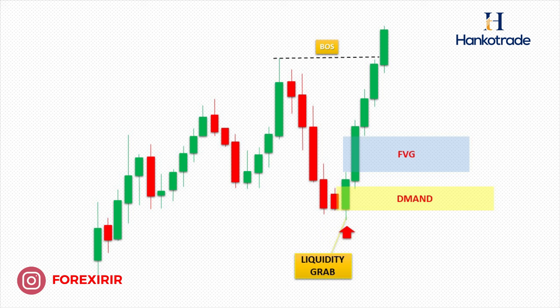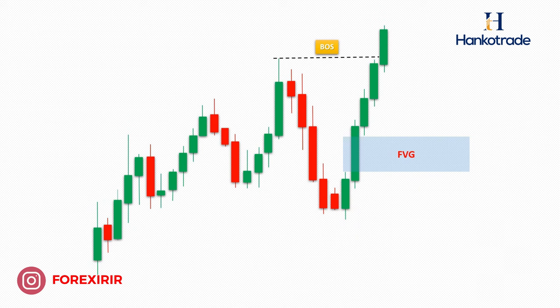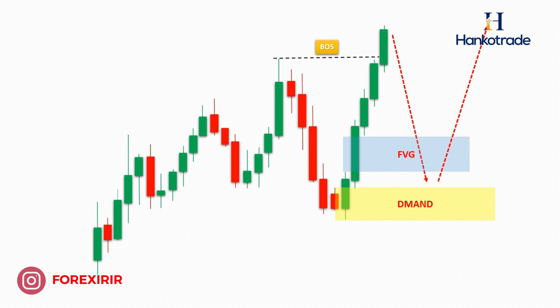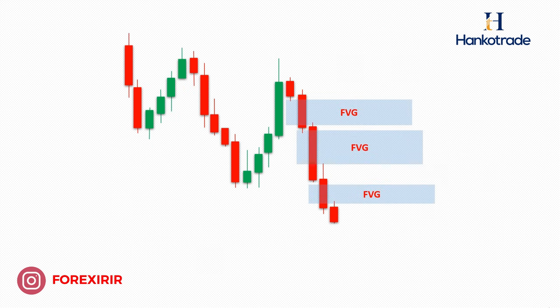Now, a crucial question arises: where should we place our stop loss if we decide to set a buy limit at this order block? The safest location for our stop loss is positioned just below the wick where the upward movement initiated. Hence, we incorporate this area into our order block zone as well. Then, we patiently await a correction, seizing trading opportunities as they materialize. Here we have the last candle that caused this market inefficiency, but where should we position our stop to shield ourselves from market fluctuations? The answer lies just above the swing high. Consequently, we'll include this area within our order block zone.